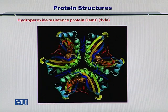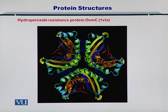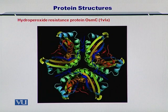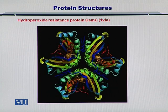Here you see a protein — the hydroperoxide resistance protein OSMC, with ID 1VVLA — and you can see the effect of these interactions and these forces, and how beautiful this protein is, and how it performs its function in a biological system within the cells.